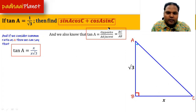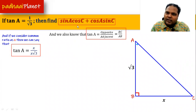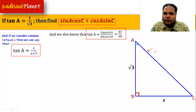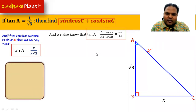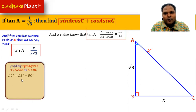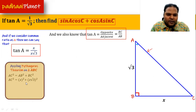Now let's move ahead. We need to find the values of sin(A) and cos(C), and for both we need the hypotenuse of the triangle, which is AC. We will apply the Pythagorean theorem on triangle ABC. That gives us AC² = AB² + BC². Putting in the values of AB and BC, we find AC² = 4x², and taking the square root of both sides gives AC = 2x.